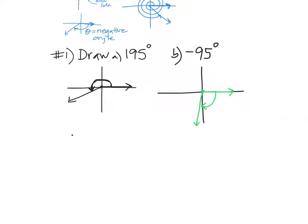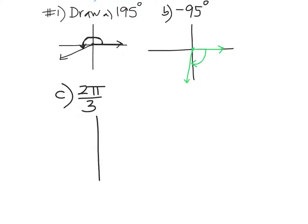Now let's do some radian measures. We're going to draw the angle 2π/3. Do not spend your time converting that to degrees — you need to get used to radian measure. Think of this as 2/3 of a pi. Pi is 180. So this right here is pi radians. 2/3 of that — if I break the top half into thirds, 2/3 would be this angle here. Start here and go over to there. My thirds are pretty exact there.